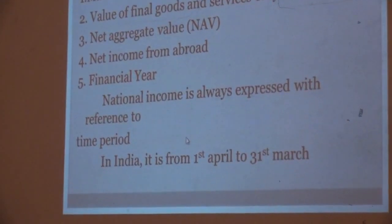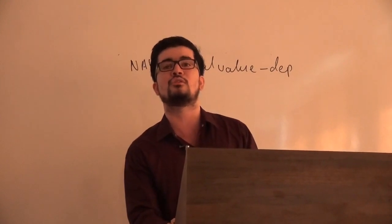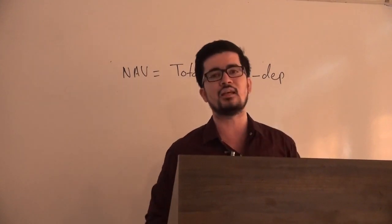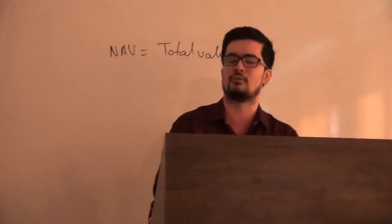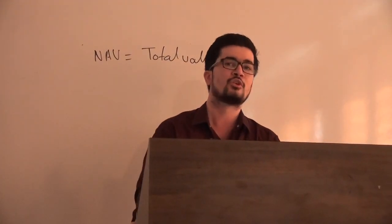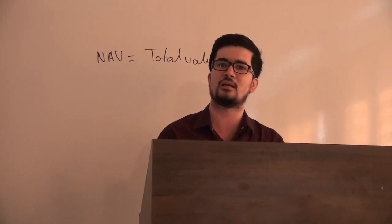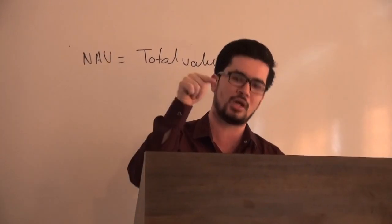The fifth feature is the financial year. As commerce students, we know the financial year starts on 1st April and ends on 31st March. When calculating national income, only the goods and services produced during that one year are taken. The sixth feature is the flow concept — national income shows the flow of goods and services produced in the economy during a year. Goods produced in the last year or to be produced next year are not included; only goods produced in that particular year are taken.